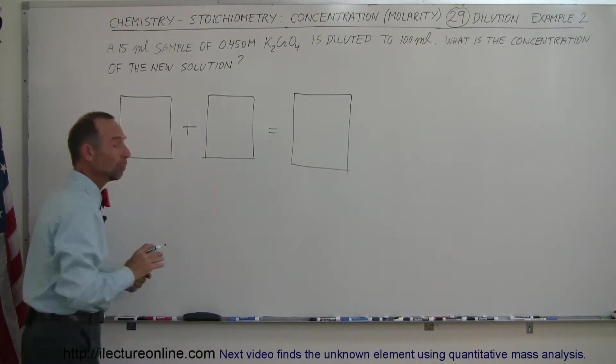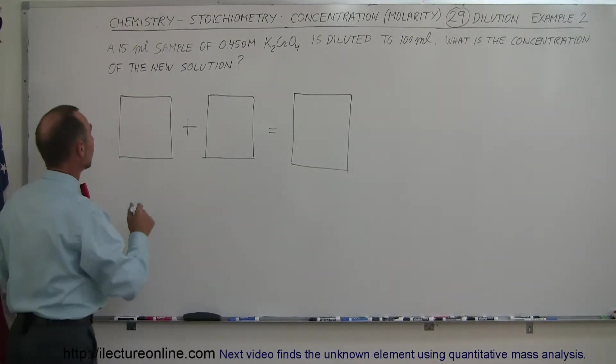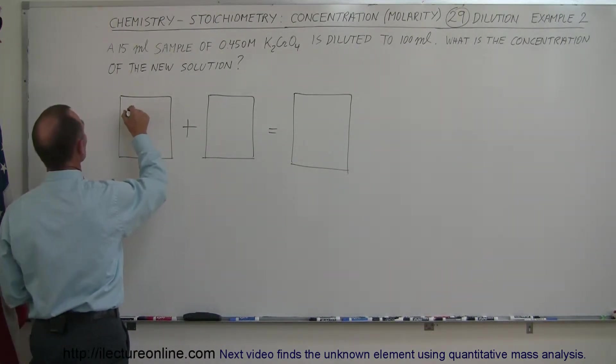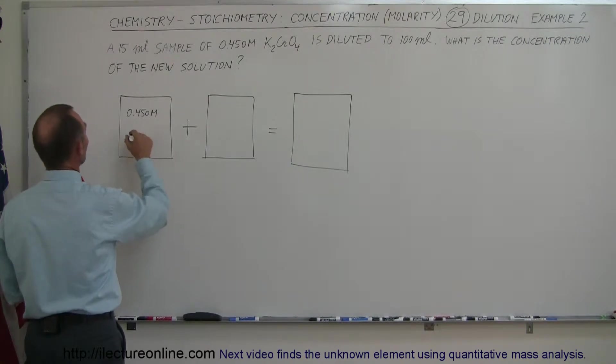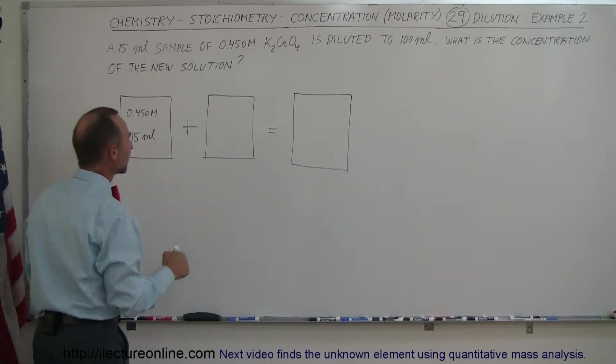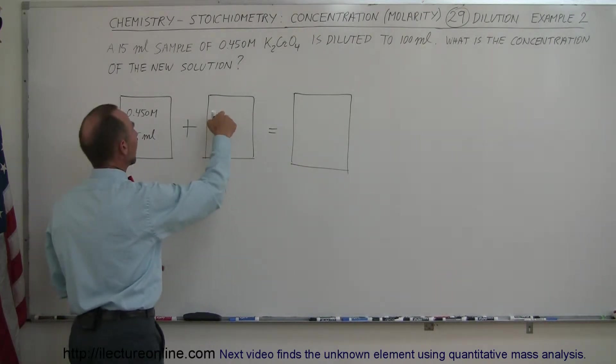So here we're going to write in the molarity and the quantity. So the molarity here is 0.450 molarity or moles per liter and the amount that we have is 15 milliliters. So we put in the amount and the molarity. Over here we put in the amount and the molarity.